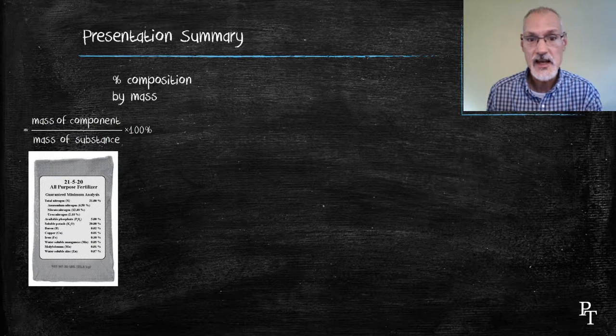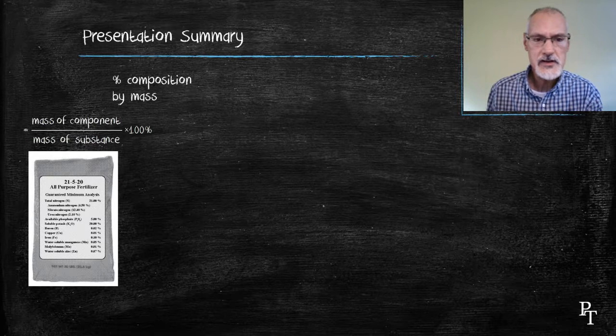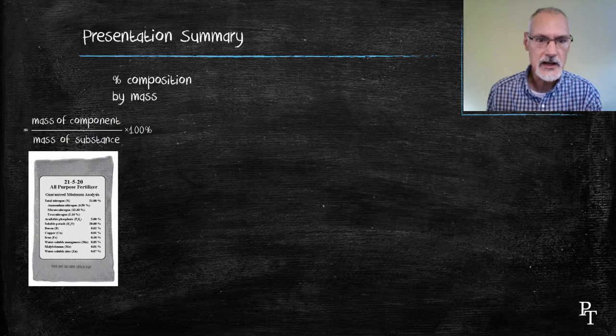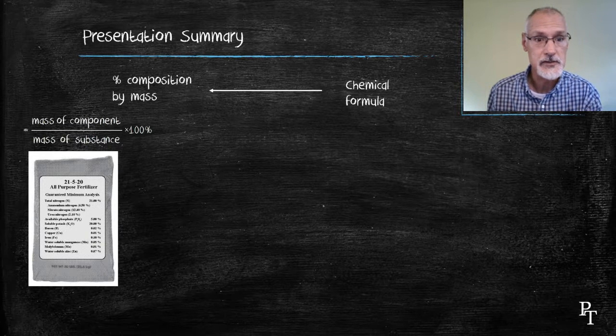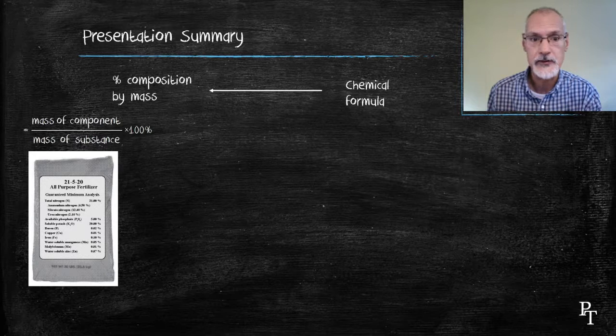Labels of fertilizer often list the elements that are present in the sample. Percentage composition can be obtained through knowledge of the chemical formula, so we'll look at that way of calculating the percentage composition given a substance's formula.